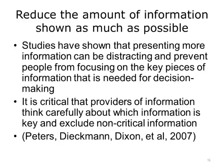Another way to help communicate health risk is to reduce the amount of information shown as much as possible. Information is provided to respect consumer and patient autonomy and to help them make better informed decisions. Cognitive drawbacks exist, however, to providing more information. Studies have shown that presenting more information can be distracting and prevent people from focusing on the key pieces of information needed for decision making. Health information providers are faced with a challenge to communicate important content to patients and consumers through patient portals, decision aids, and mobile apps. At the same time, they are not to communicate too much content, since extraneous information appears to confuse those who are less numerate. Therefore, it is critical that providers of information think carefully about which information is key and exclude non-critical information.